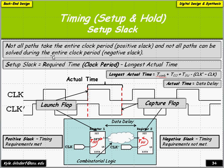Not all paths take the entire clock period, so we have positive slack. Paths that cannot complete during the entire clock period have negative slack — meaning they do not meet the timing requirement. If we have positive slack, timing is met. The setup slack equals the clock period minus the longest actual path, which is: combinational logic plus clock-to-Q plus setup minus clock skew. If any positive value remains, we meet timing and have room to spare.